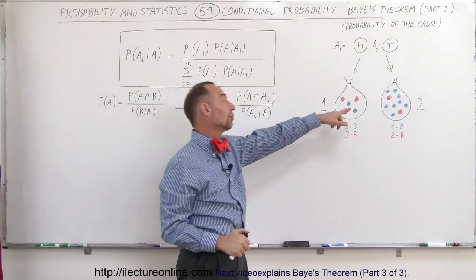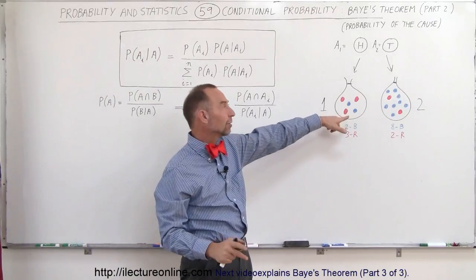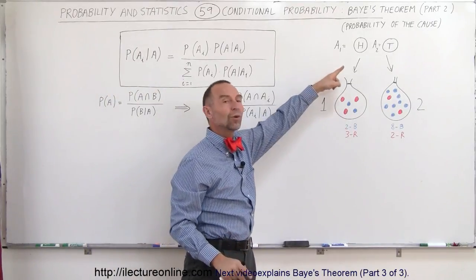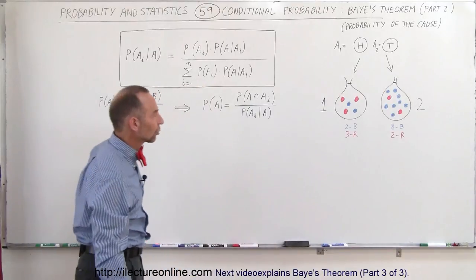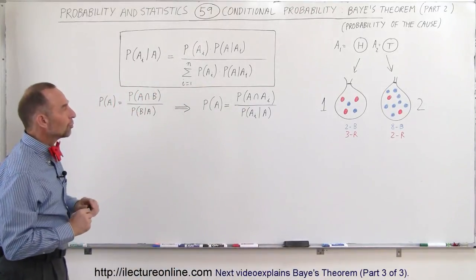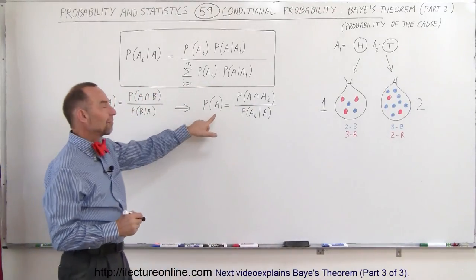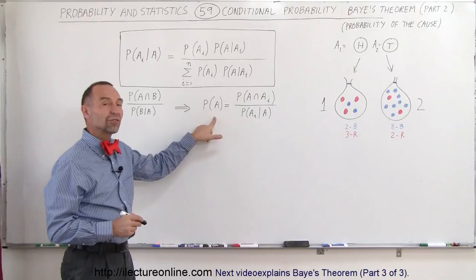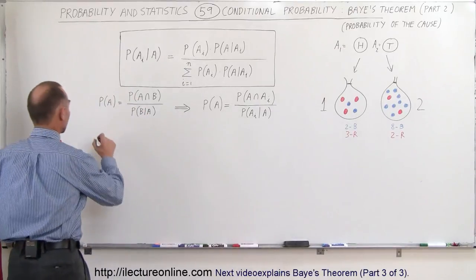And then Bayes' Theorem says, if we have the known outcome from the other event, what was the probability that the initial event has occurred? So what we're going to do here now is realize that we have another way of expressing the probability of the event A occurring.